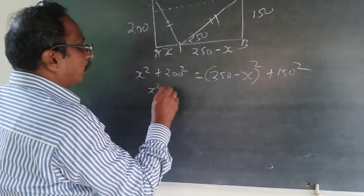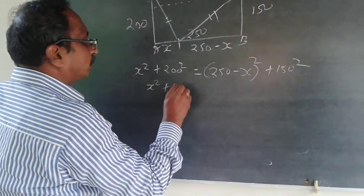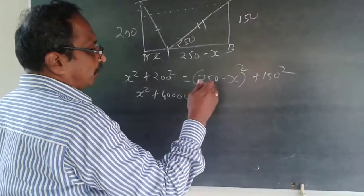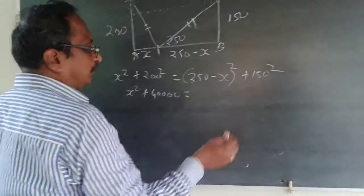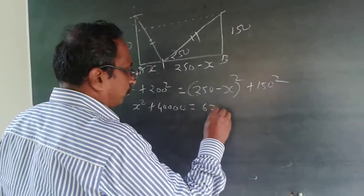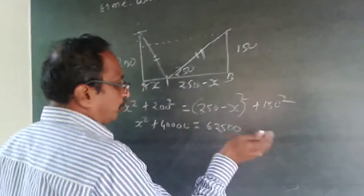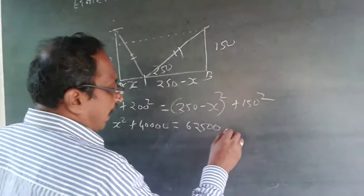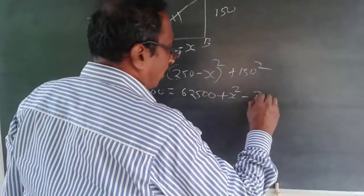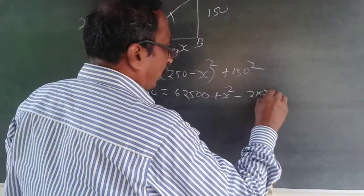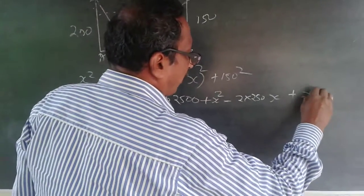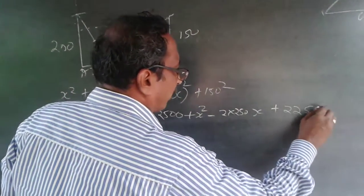Expanding: x² + 40,000 = (250 − x)², which expands as a² − 2ab + b², giving 62,500 − 500x + x², plus 150² which is 22,500.